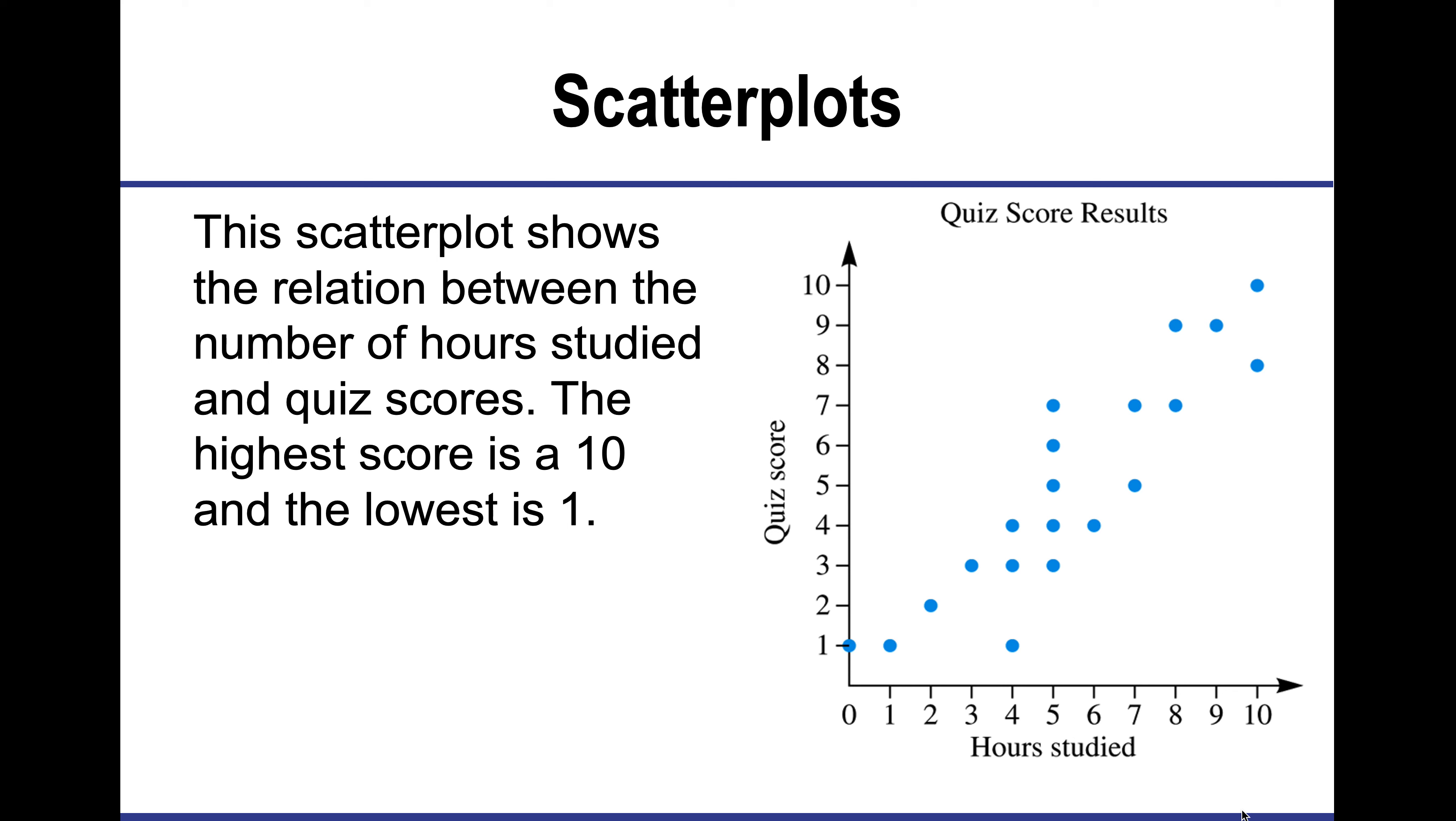So scatter points shows the relationship here between the number of hours studied and a quiz score. So notice when I'm looking at a line graph, it's over time. But now that I have two different variables, it's going to be a scatter plot and it's not occurring over time.